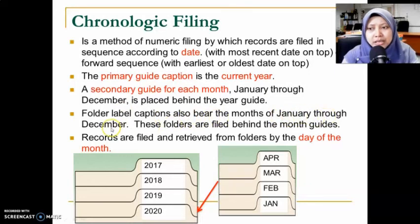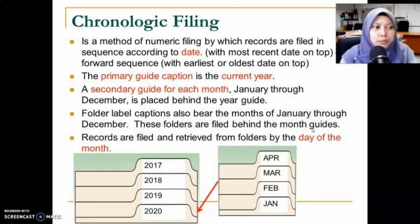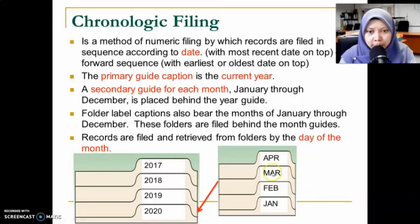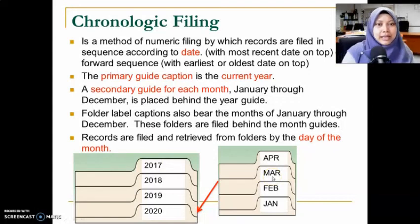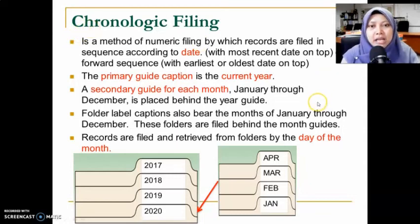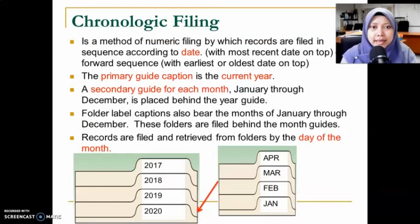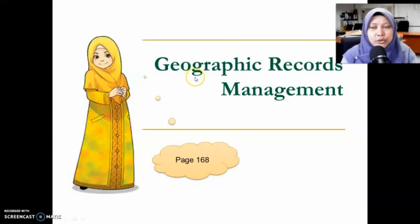The folder level caption also bears the month from January to December. Folders are filed behind the month guide — for example, a file opened in March 2020 goes under year 2020, behind the March guide. Within March, records are further arranged by day of the month, from the 1st to the 31st. That's all for numeric filing methods. In the next class, we will cover geographic record management. Thank you.